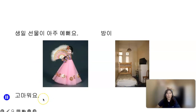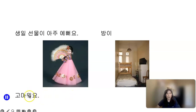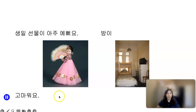In fact, 고맙다 — 'to be thankful' — is another example of an irregular predicate. When you conjugate it, ㅂ is removed and you add 워: 고마워요. That is why 'to be thankful' is expressed as 고마워요.